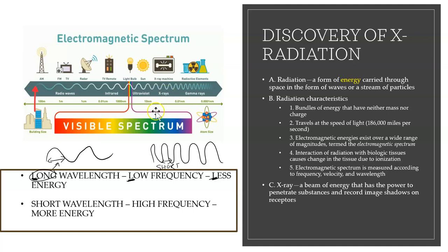When looking at wavelength, there can be long wavelengths. A long wavelength means the distance measured from one side of the wave to the other is large. Wavelength is the distance of the wave. A short wavelength means the distance from one end to the other is small.